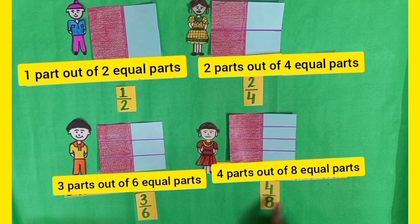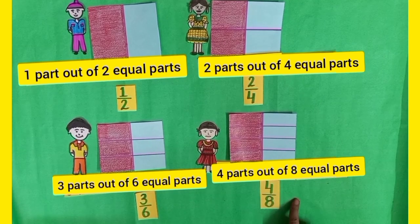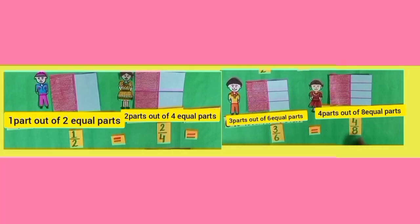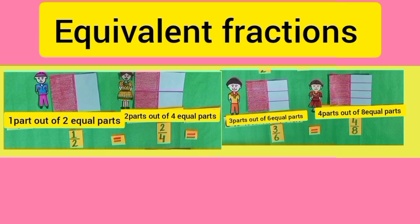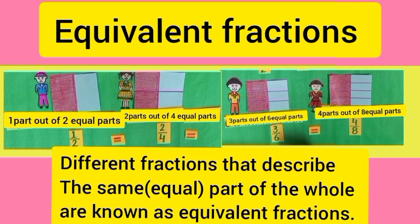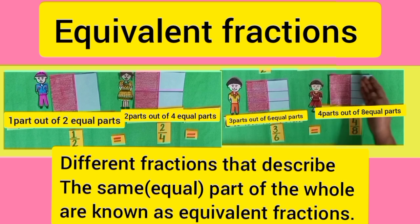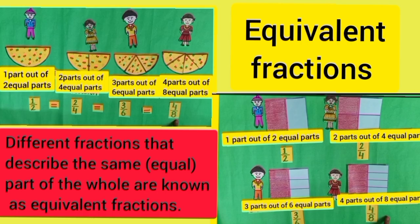Dear students, these fractions are different, but they are describing the same part of the whole. So, one upon two is equal to two upon four, is equal to three upon six, is equal to four upon eight. These are equivalent fractions, because these different fractions describe the same part of the whole. Today we have learned about equivalent fractions with the help of two different examples.